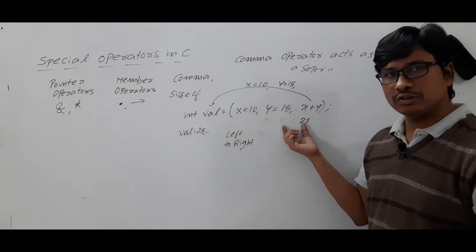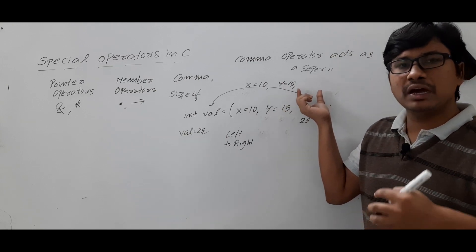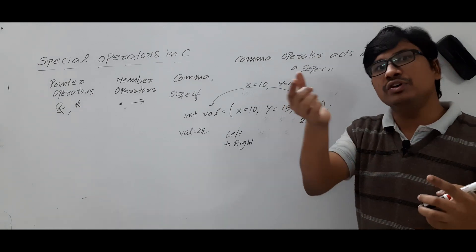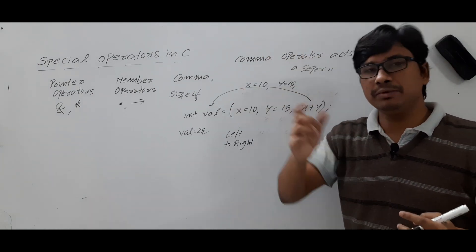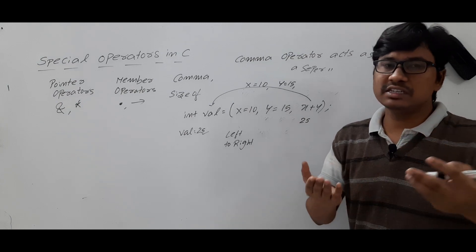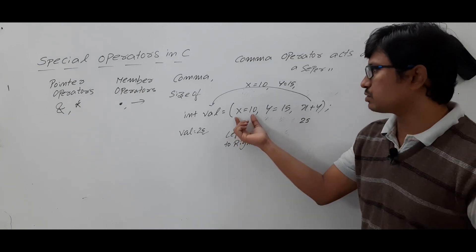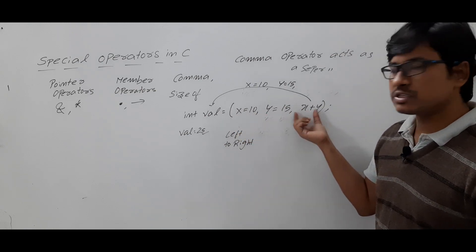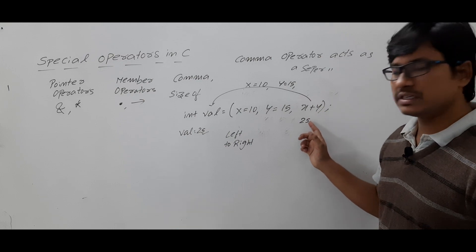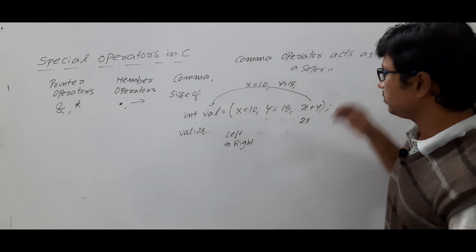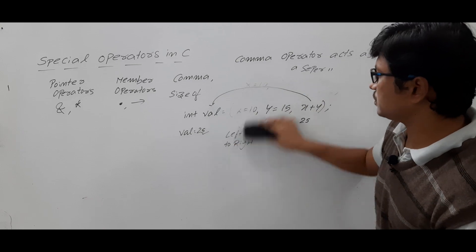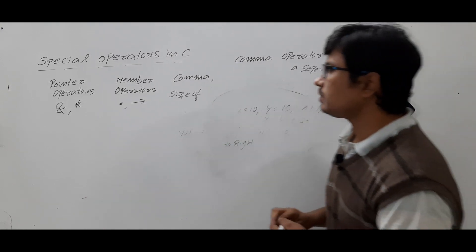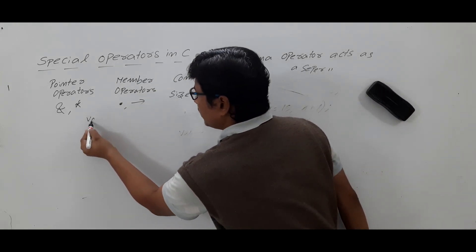To recap: it starts executing from left to right. In `int a = 3, b = 4, c = 5`, a is initialized with 3, b with 4, and c with 5. Similarly, in the previous example, x is initialized with 10, y with 15, and x + y result is assigned to value.